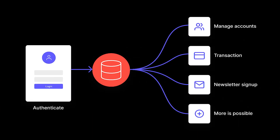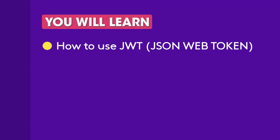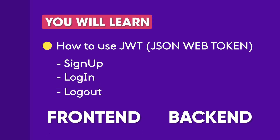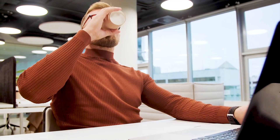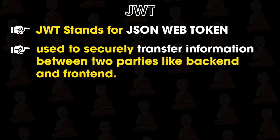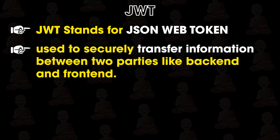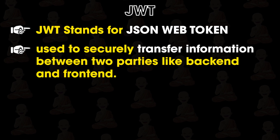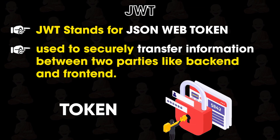JSON Web Token is one of the most important topics for user authentication. Throughout this mini-course, you will learn how to use JWT with sign up, login, and logout for both frontend and backend in easy explanation. JWT stands for JSON Web Token, which is used to securely transfer information between two parties like backend and frontend. But the main reason for using JWT is to authenticate users using its token.